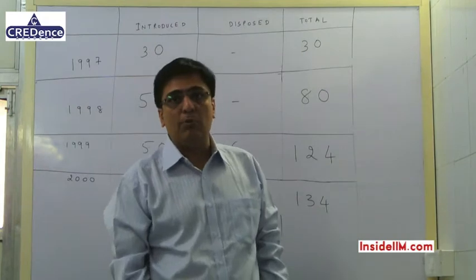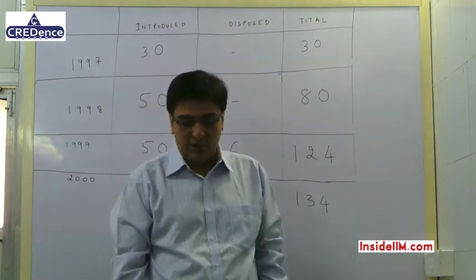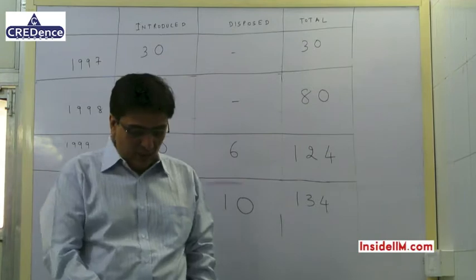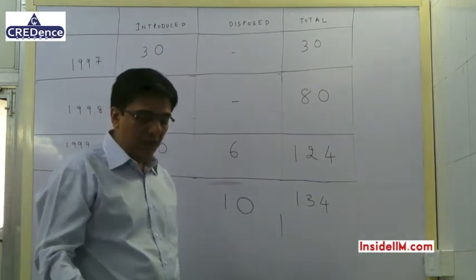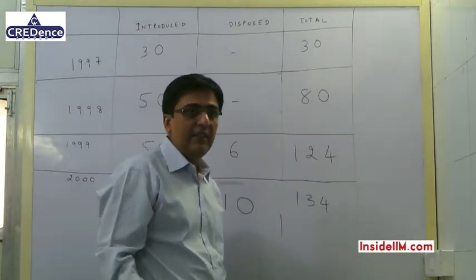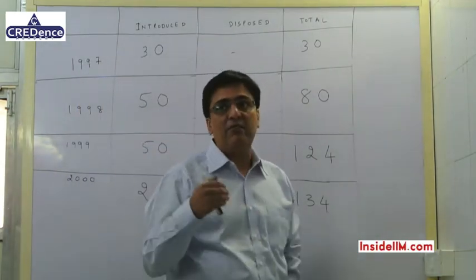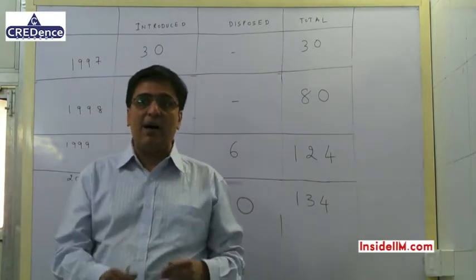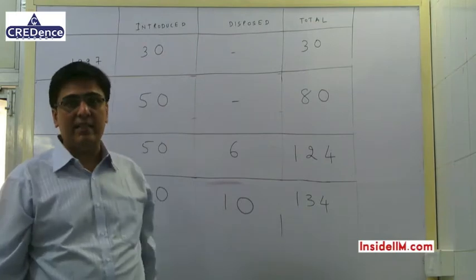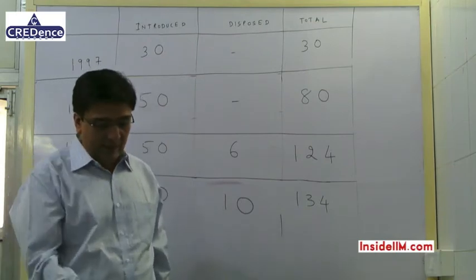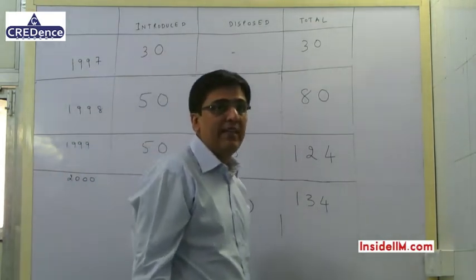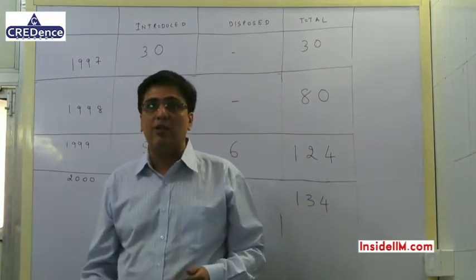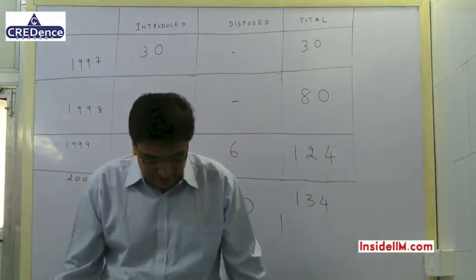We are going to start with the first set in your chapter, that is set 1. If you look at the set, it's a set of bar graphs. All the information given is in terms of graphs and values are given on the top. The immediate feeling is that it's a bar graph set and hence it's going to be easy. But let me warn you that might not be the case — the set will be difficult even though all the values are given.